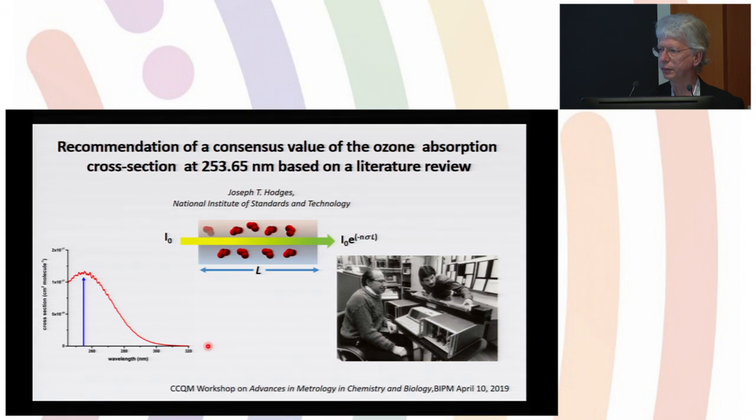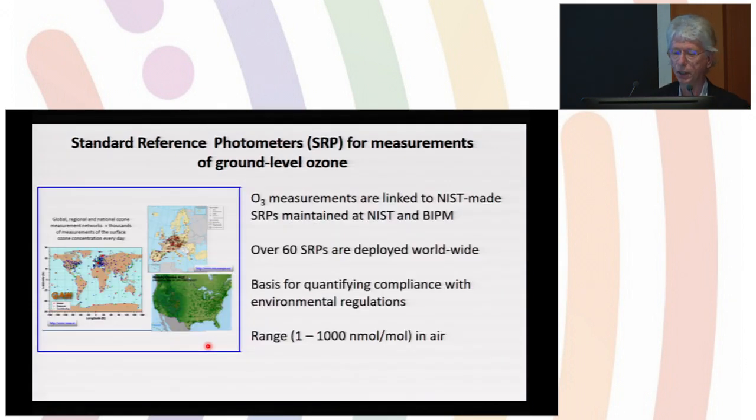The effort revolved around answering a very well-defined question: let's come up with a better value for the absorption cross-section of ozone at 254 nanometers. The reason we need this is because all tropospheric ozone measurements in the world to support regulatory and compliance issues are based on this developed instrument called the Standard Reference Photometer.